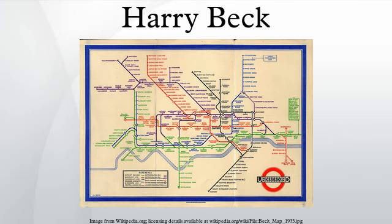In 1997, Beck's importance was posthumously recognized, and currently the statement 'this diagram is an evolution of the original design conceived in 1931 by Harry Beck' is printed on every London Underground map. A physical anomaly is that the city branch of the Northern Line actually passes to the west of Mornington Crescent on the West End Branch. Beck's original map showed this correctly, but later versions show the city branch to the east of Mornington Crescent.